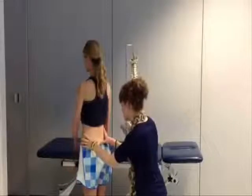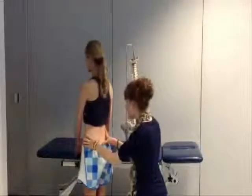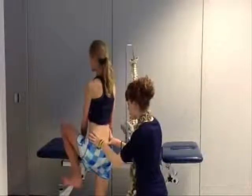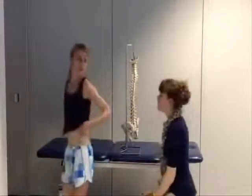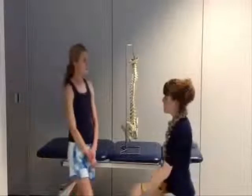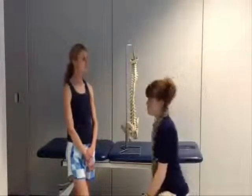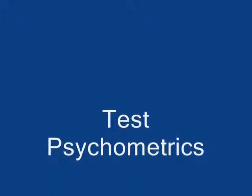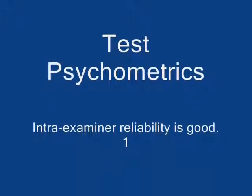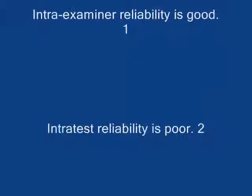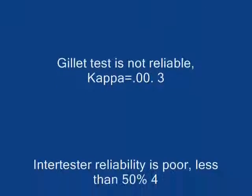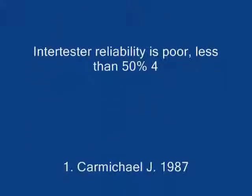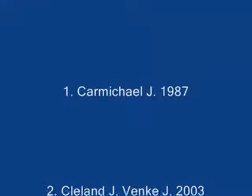I'm just going to switch sides here. If you could bend your left knee up towards the ceiling — and back down. Very good. There was equal inferior movement on both sides, which indicates that there's no hypomobility present.